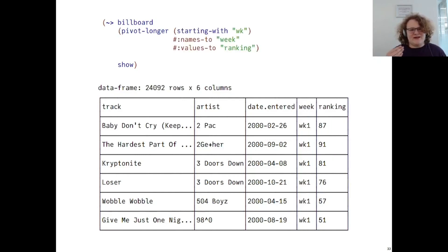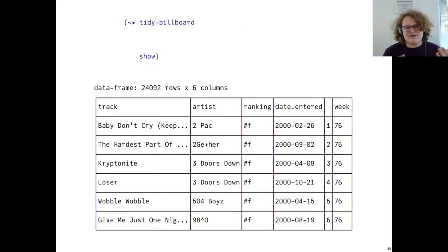For this purpose, Graphite provides the pivot longer transformation, named as such because it literally makes the data frame longer, removing columns and adding rows. We turn the names into a variable called week and the values into a variable called ranking, and we now have tidy data. In addition, it may be advantageous to have the week be a number, for example, if we wanted to make a time series. So, we make a new variable called week that depends on the old variable called week and just converts it into a number. We can then save the result of this operation as the variable tidy billboard.